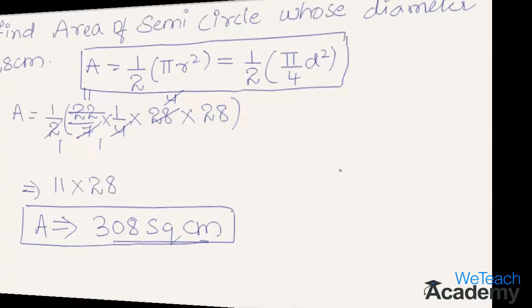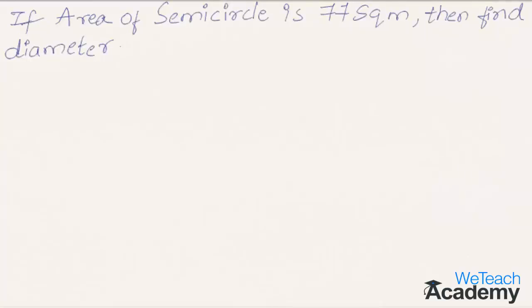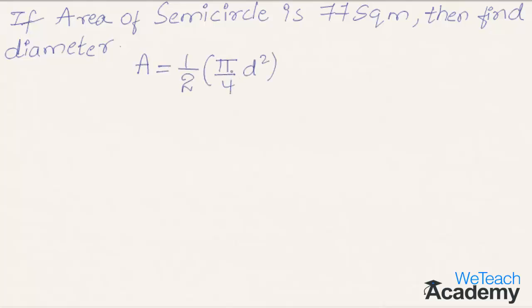Now let us proceed and solve one more example using the same formula. The given example is: if the area of a semicircle is 77 square meters, then find the diameter. The area of semicircle using diameter is given by the formula 1/2 × (π/4) × d².